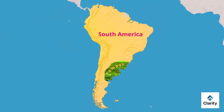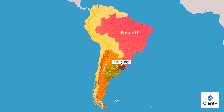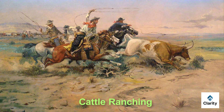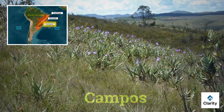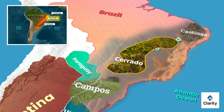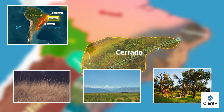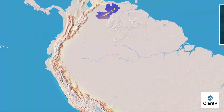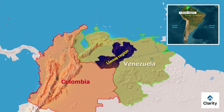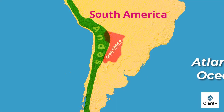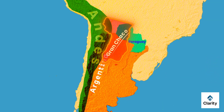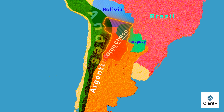South America also has wide plains and grasslands. The Pampas are fertile plains in Argentina, Uruguay and southern Brazil, famous for cattle ranching and agriculture. The Campos lie in southern Brazil, Uruguay and parts of Argentina — open grasslands with moderate rainfall. The Cerrado is a tropical savannah in central Brazil with tall grasses, shrubs and small twisted trees, rich in biodiversity. The Llanos stretch across Venezuela and Colombia — tropical grasslands that flood in the wet season and dry out in the dry season. The Gran Chaco is a dry plain spread across Argentina, Paraguay, Bolivia and Brazil, known for thorny forests, shrubs and gaucho culture.